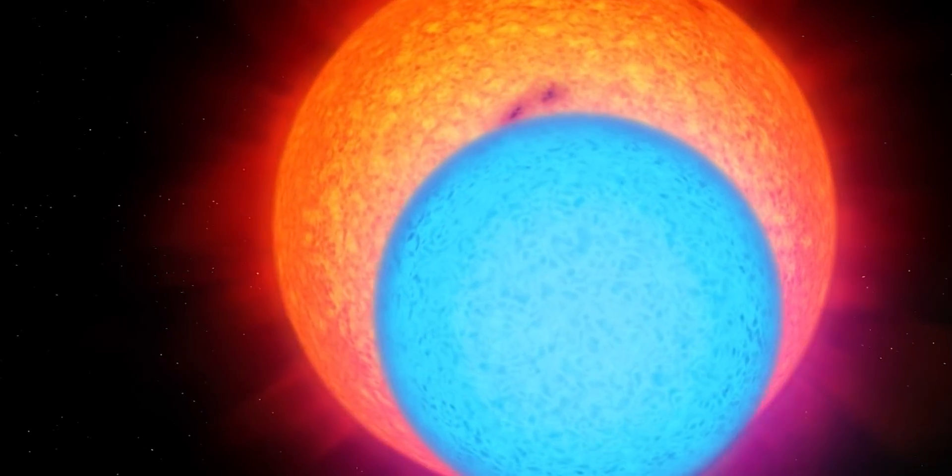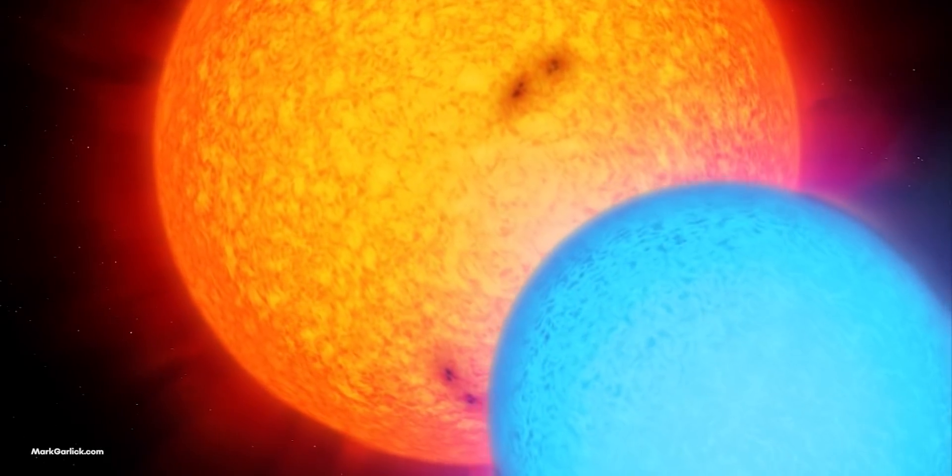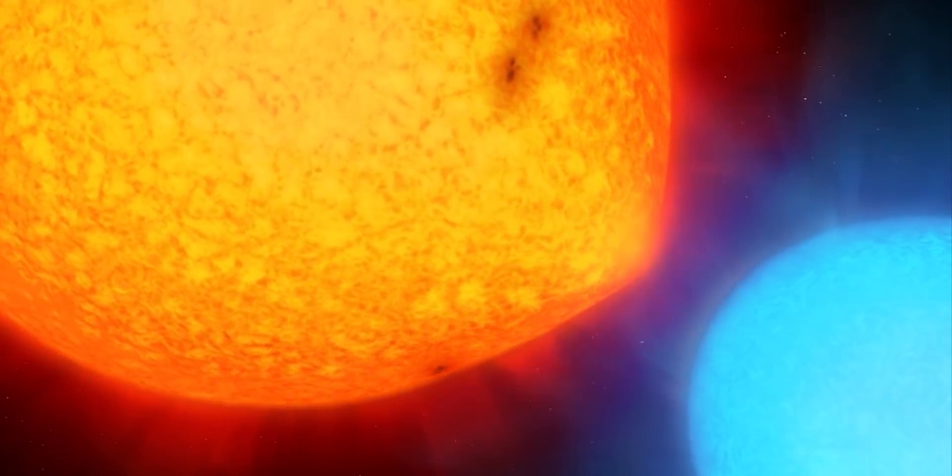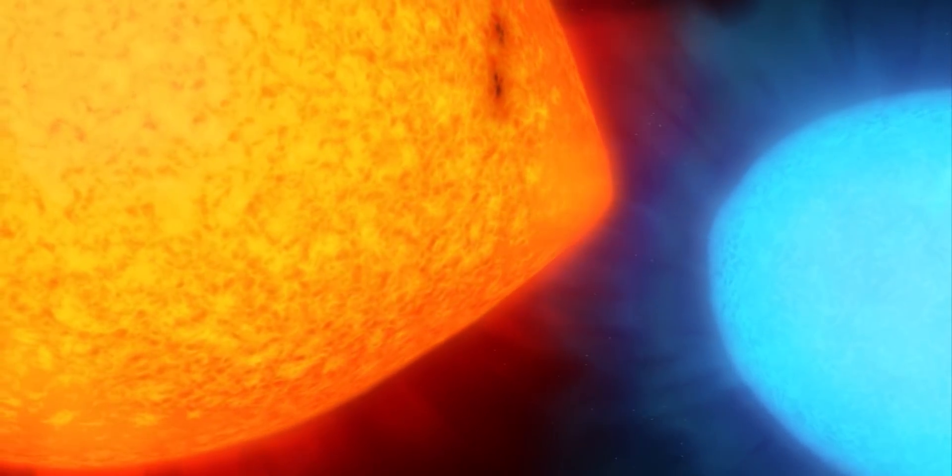Binary stars are very simply stars orbiting around each other. They are linked by their gravitational attraction and orbit around their common center of mass.